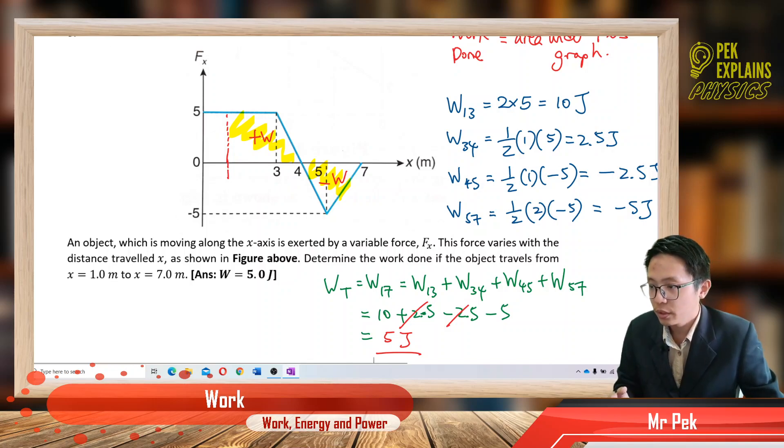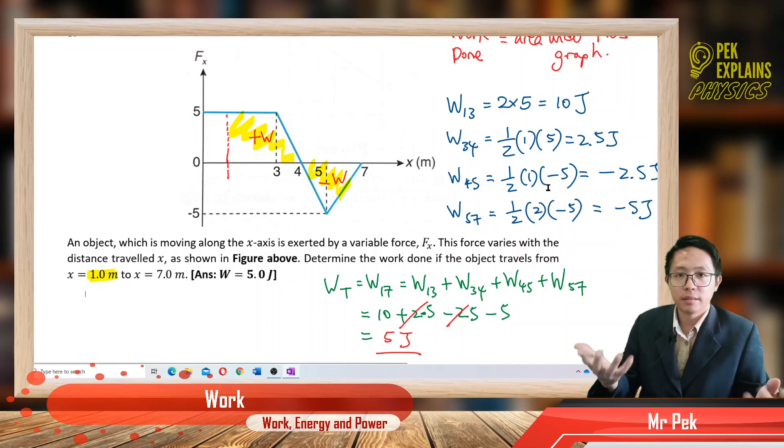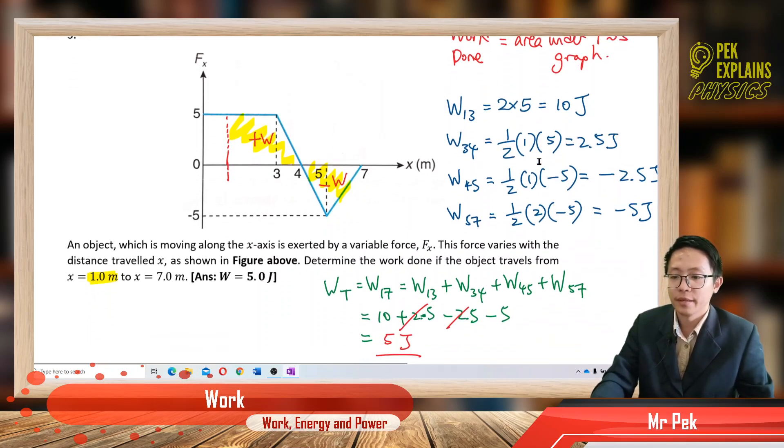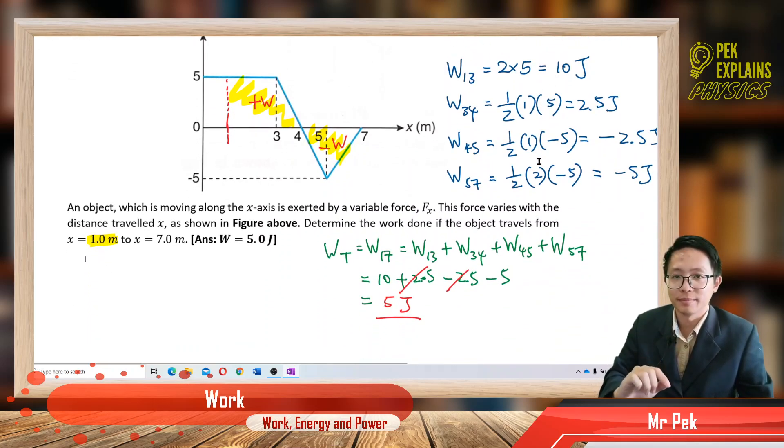So we must be careful, start from what point? Start from 1 point. So work done is the area under, work done, area under force displacement graph. So that's it. See you for the next questions. Bye.